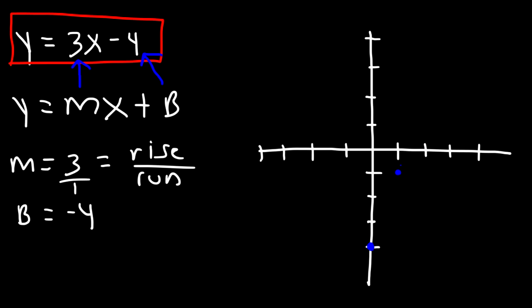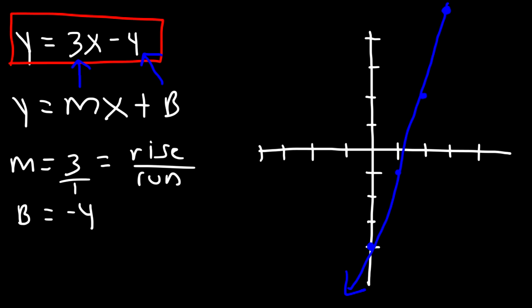Starting from the second point, we're going to travel up 3 units and then 1 unit to the right, giving us the point (2, 2). We could go up 3 and over 1 one more time, but we really don't need to. Now we have enough information to draw the graph. You can use a ruler if you want — you just need to draw a straight line through those points. Really, all you need is 2 points to draw a linear function.